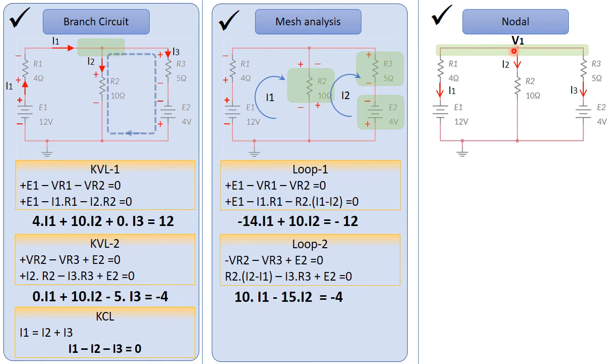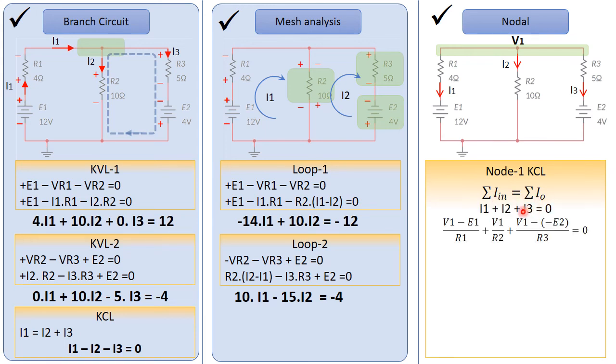Then we assume that this node has the highest potential, highest voltage, so all the currents will be going out. So we will write Kirchhoff current law for this node. So summation of current in equals summation of current out. So we have I1 plus I2 plus I3 equals 0.